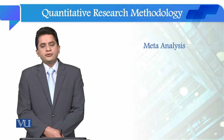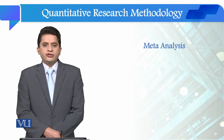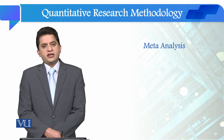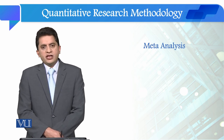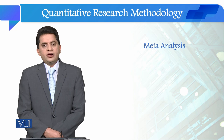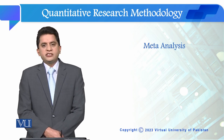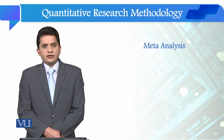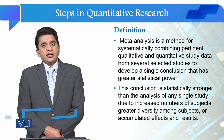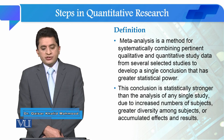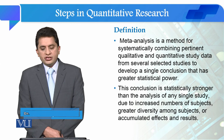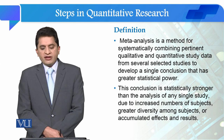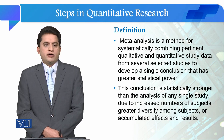Students, we are going to see the third type of literature review, which is called meta-analysis. Meta-analysis is entirely different from the systematic literature review and scoping review. Meta-analysis is a method for systematically combining pertinent qualitative and quantitative study data from several selected studies to develop a single conclusion that has greater statistical power.